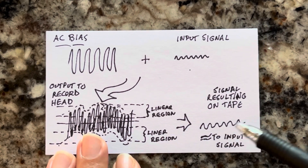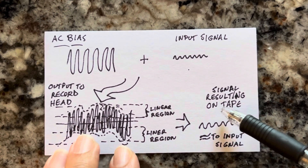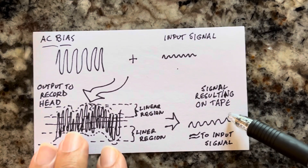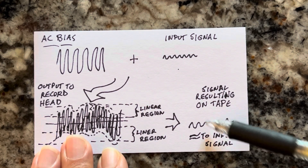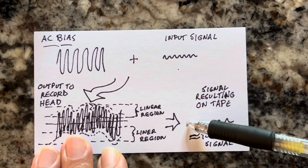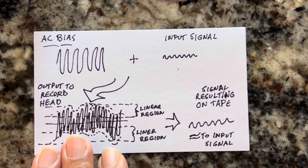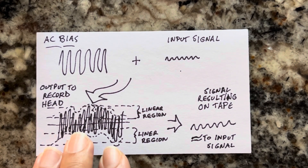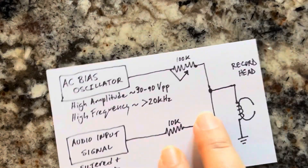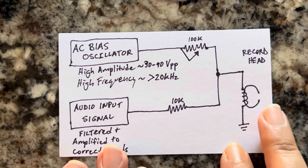The resulting signal that you get on the tape should be as equivalent as possible to your input signal. So how do we implement this in circuitry? Here's a block diagram.